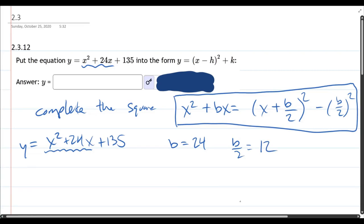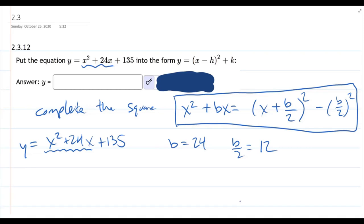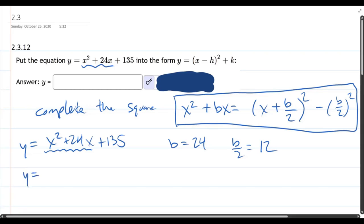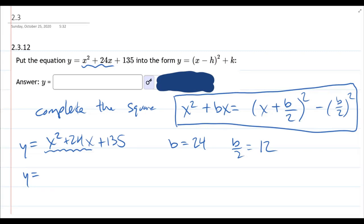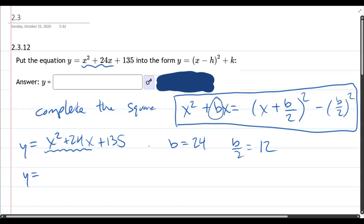Now if your b is odd, your b over two is going to be a fraction, and that's okay. Fractions aren't fun, but it shouldn't make the problem any more difficult, other than you may need some common denominator if you want it to simplify later. All right, so we got b over two. Now notice the left side uses b, which is 24. The right side, both places use b over two. So I'm going to use this 12 in place of b over two.